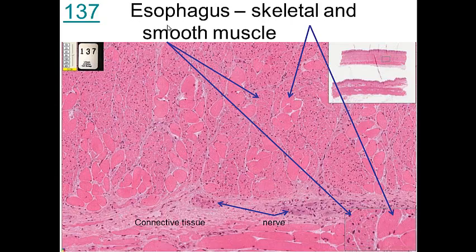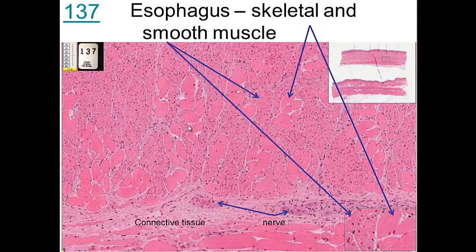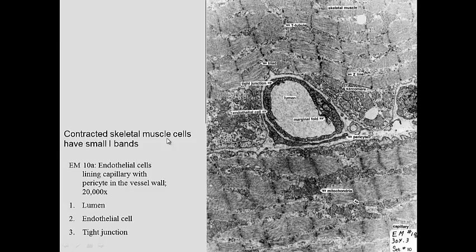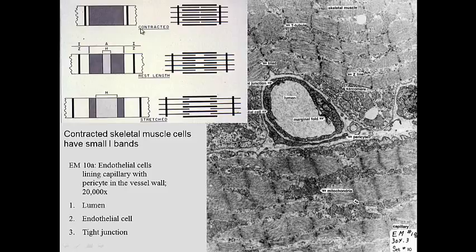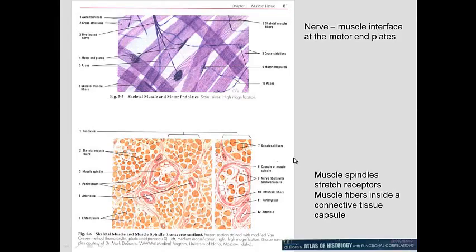In the esophagus, there is a combination of skeletal muscle and smooth muscle. You can see the smaller smooth muscle cells alongside skeletal muscle cells with nuclei on the periphery. Starting at the top of the esophagus, you have mostly skeletal muscle, but as you move toward the stomach, you have more smooth muscle. This is a highly contracted muscle where the I band almost disappears and the H band in the middle has also disappeared.